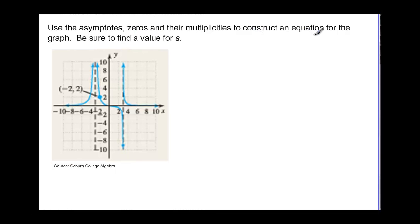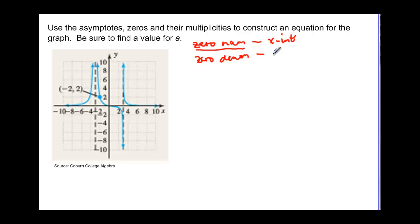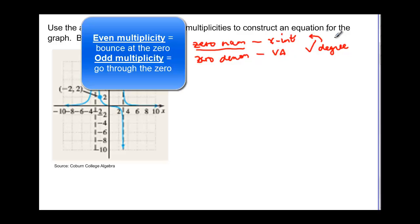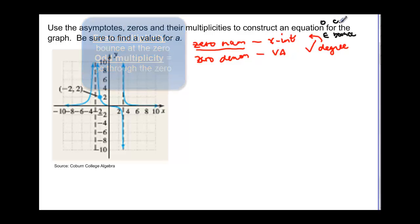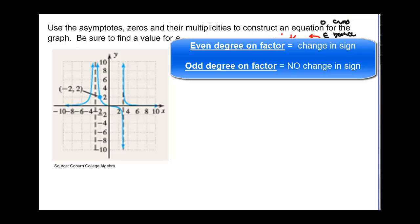Now use the asymptotes, zeros, and multiplicities to construct an equation for the graph, and find a value for a. We have the zeros of the numerator giving x-intercepts, and zeros of the denominator giving vertical asymptotes. For x-intercepts, even degree means the graph bounces, and odd degree means it crosses. For vertical asymptotes, even degree means no sign change, and odd degree means it does change sign.